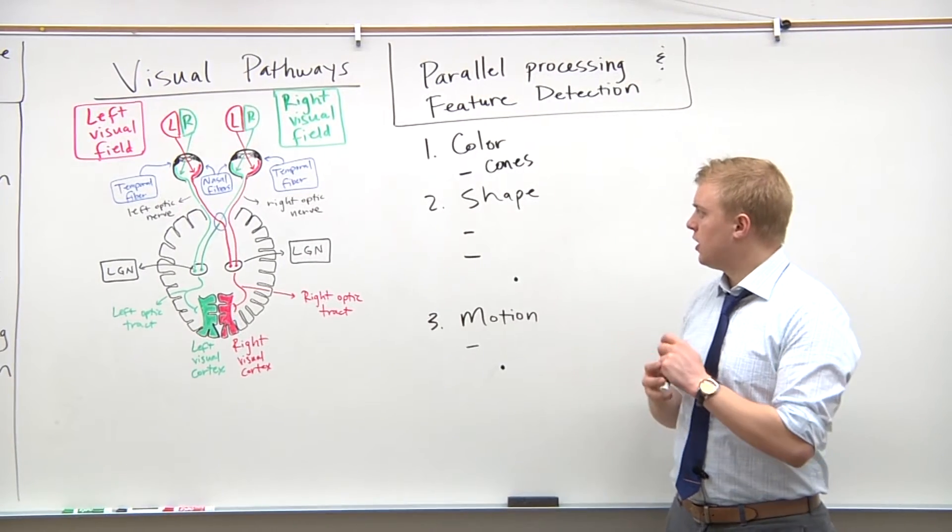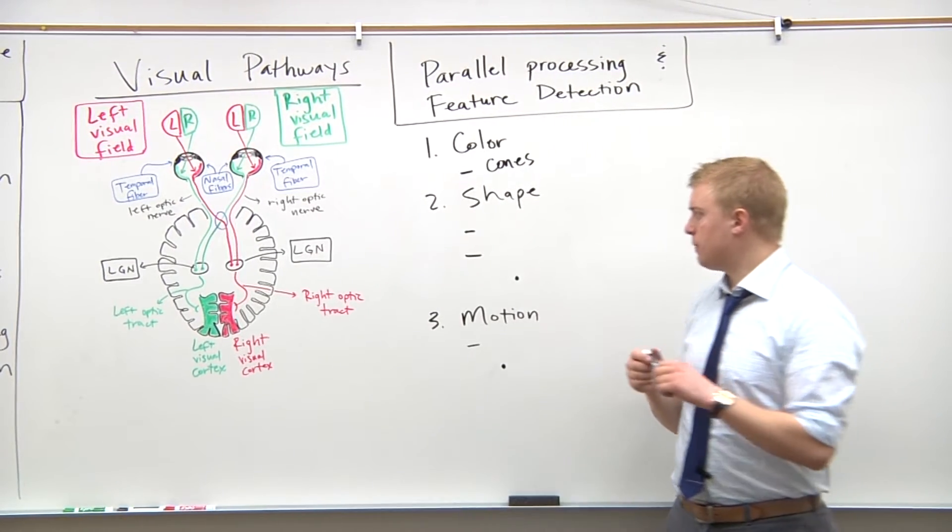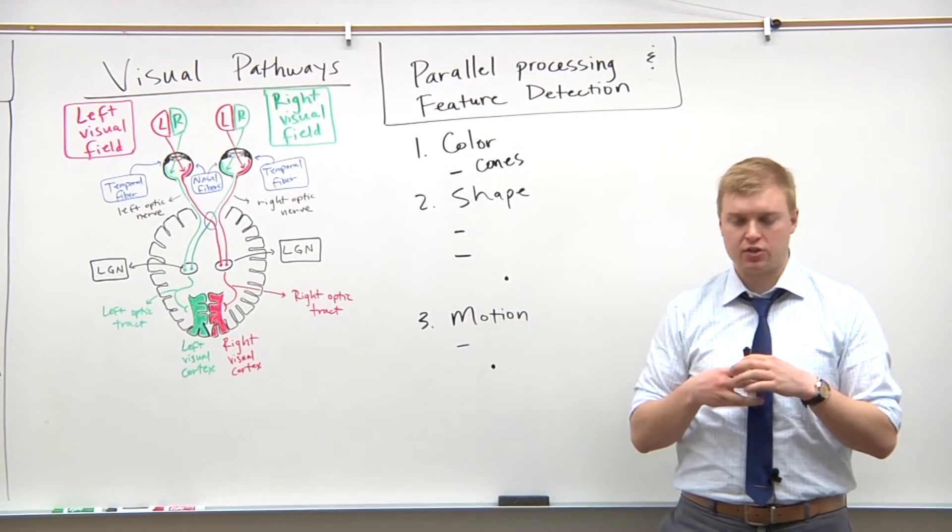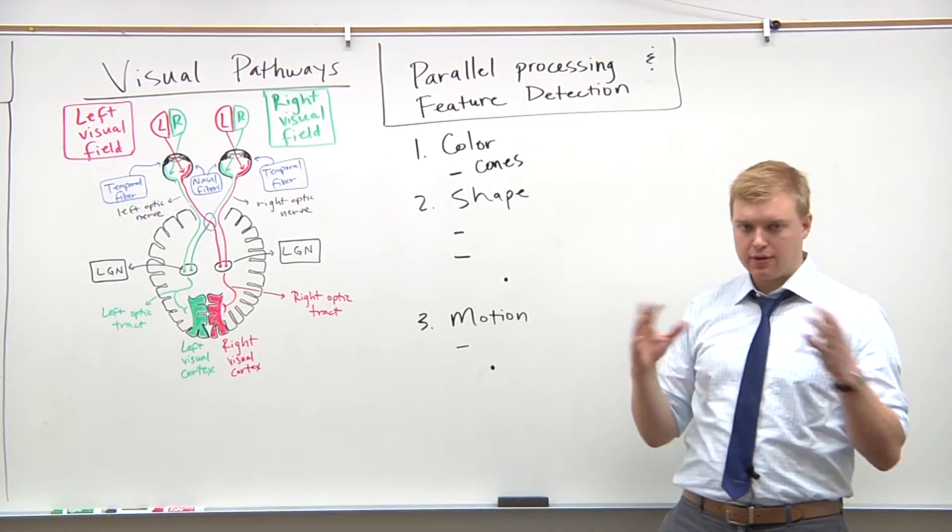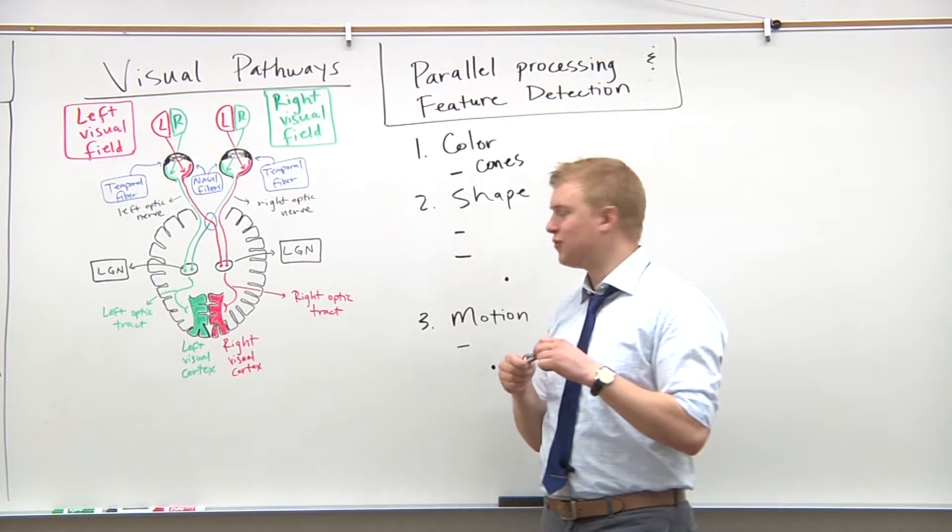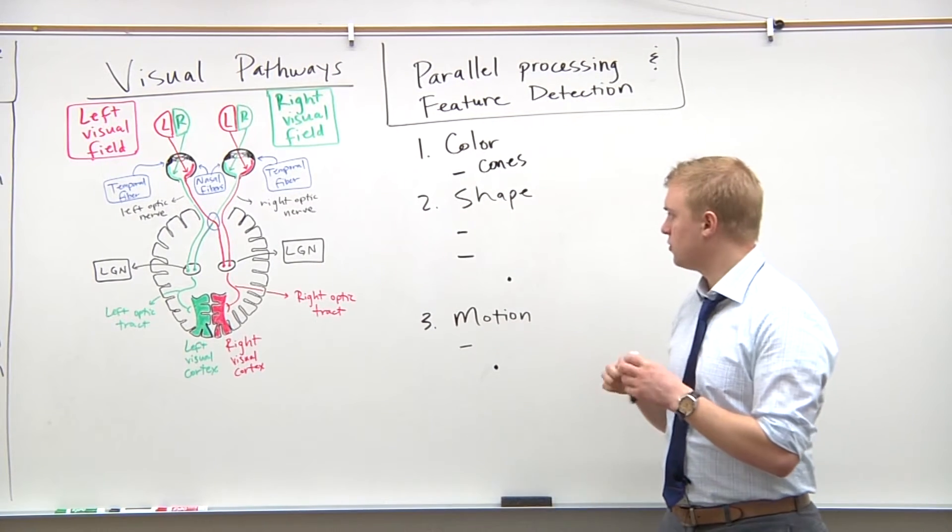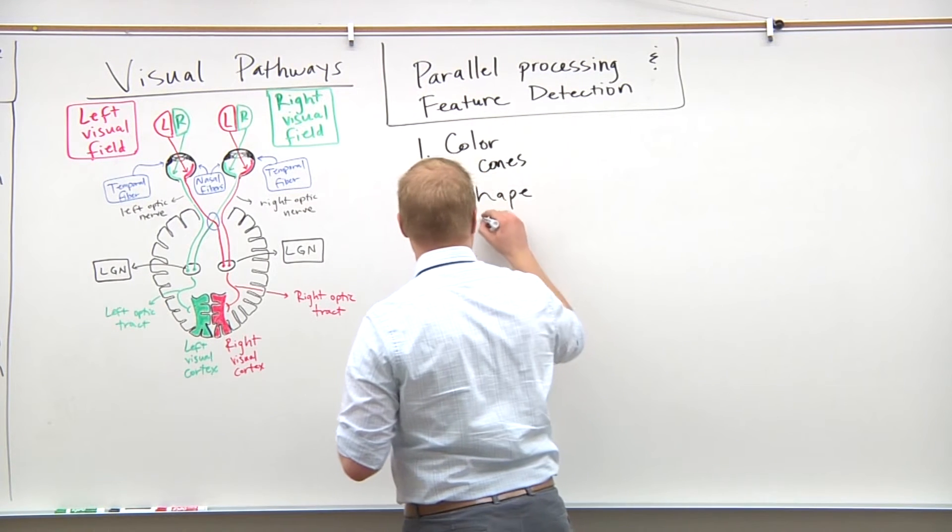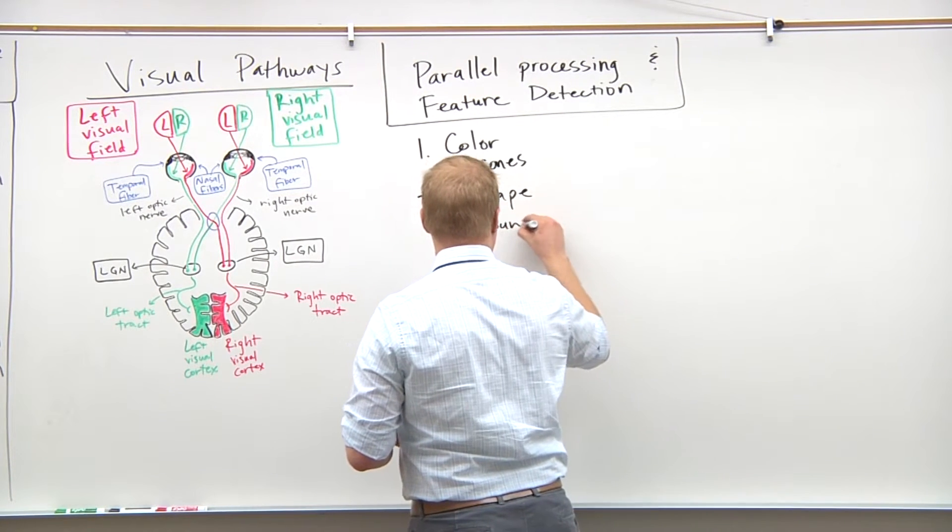Okay, now shape. Shape is made possible by what are called the parvocellular cells. It's a long word, mouthful I know, but that's what helps us to see the shape or the boundaries of an object. So I'll write up the boundaries.